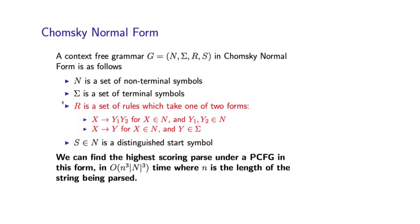First, to recap, let's remind ourselves of context-free grammars in Chomsky Normal form. A CFG in Chomsky Normal form consists of the following: N is a set of non-terminal symbols in the grammar, Sigma is a set of terminal symbols or words.